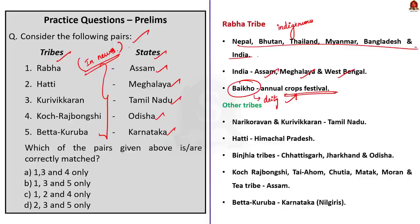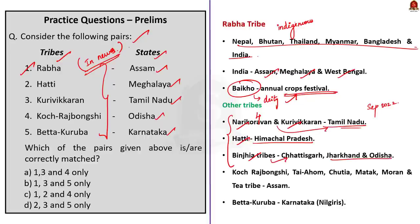In September 2022, the Union Cabinet approved the addition of four tribes to the list of scheduled tribes: Narikoravar, Kurivikaran, Hati, and Binjia. Hati tribes belong to Himachal Pradesh. Narikoravar and Kurivikaran tribes are found in Tamil Nadu. Binjia tribes belong to Chhattisgarh and some other states — they were previously listed as scheduled tribes in Jharkhand and Odisha, and are now being listed in Chhattisgarh too. Since Hati belongs to Himachal Pradesh, the second pair is incorrect.